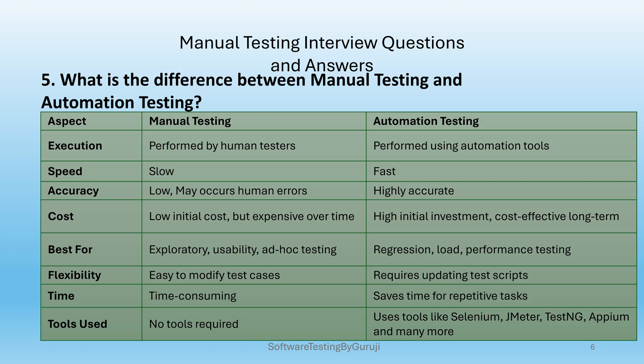Manual testing is performed by human testers; automation testing is performed using automation tools. Manual testing speed is slow; automation testing speed is fast. Manual testing accuracy is low because human errors may occur; automation testing accuracy is high. Manual testing is cost effective initially but higher long term; automation has high initial investment but is cost effective long term. Manual testing is best for exploratory testing, usability testing, and ad hoc testing; automation is best for regression, load, and performance testing.